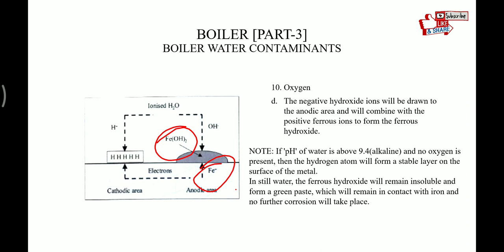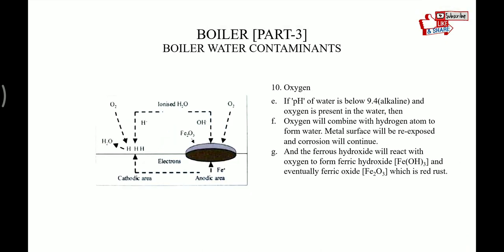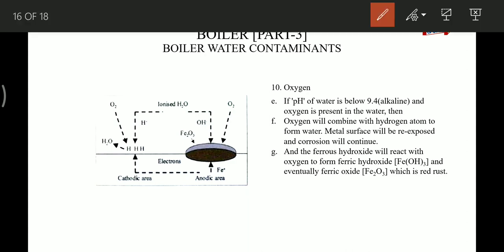If the pH of the water is below 9.4 and oxygen is present, then oxygen will combine with the hydrogen atoms to form water, the metal surface will be re-exposed, and corrosion will continue. The ferrous hydroxide will react with oxygen to form ferric hydroxide, and eventually ferric oxide, which is red rust.